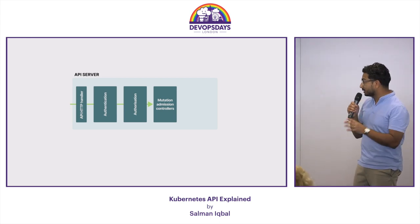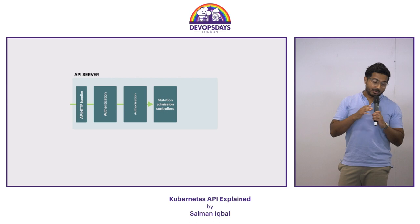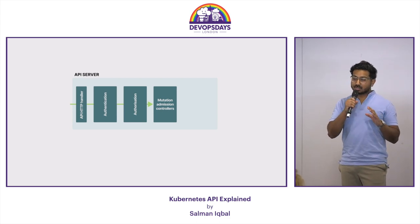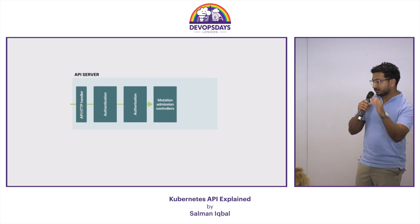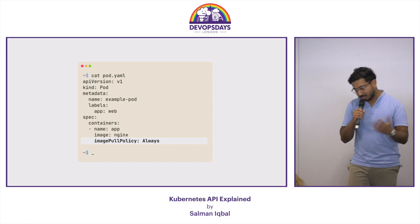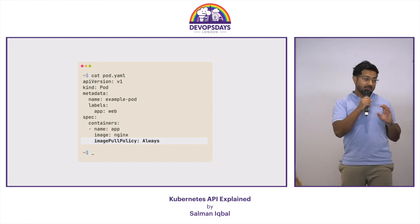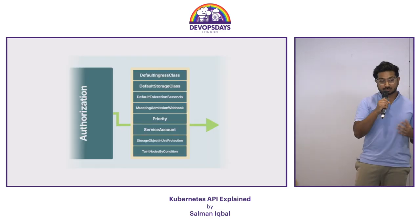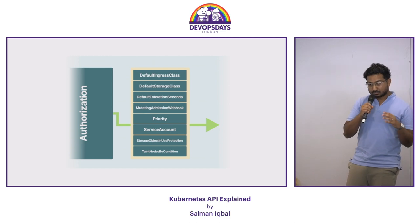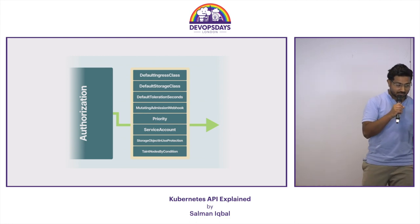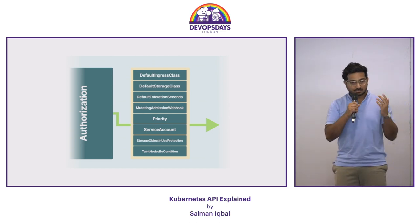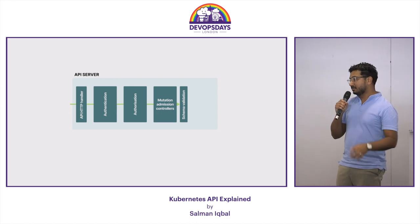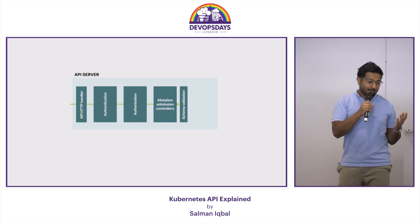Now this is where it gets interesting. We're going to talk about validation admission controllers, and there are two types. The purpose of a mutation admission controller is to take your request and modify it. For example, you haven't put in how often you should pull images, so the mutation admission controller looks at your request and sticks in some of the missing fields. After you submit a file that has maybe 12 or 13 lines, it goes through all these checks and the file ends up going from 15 lines to perhaps 150 lines.